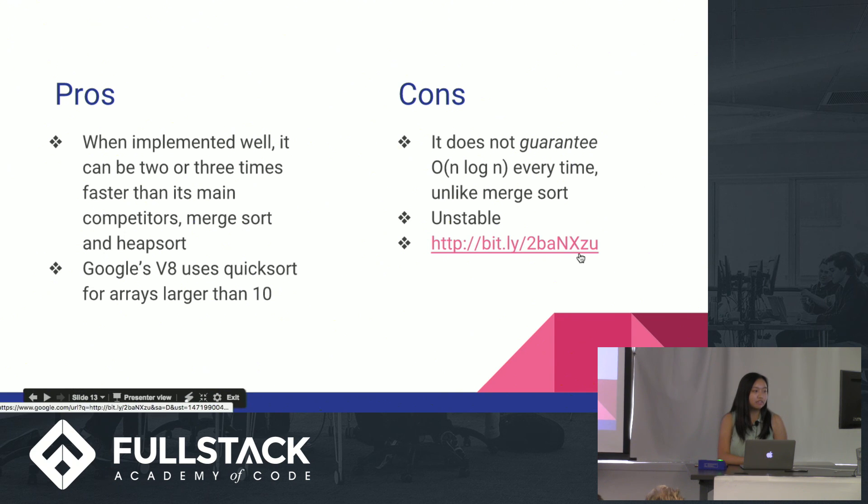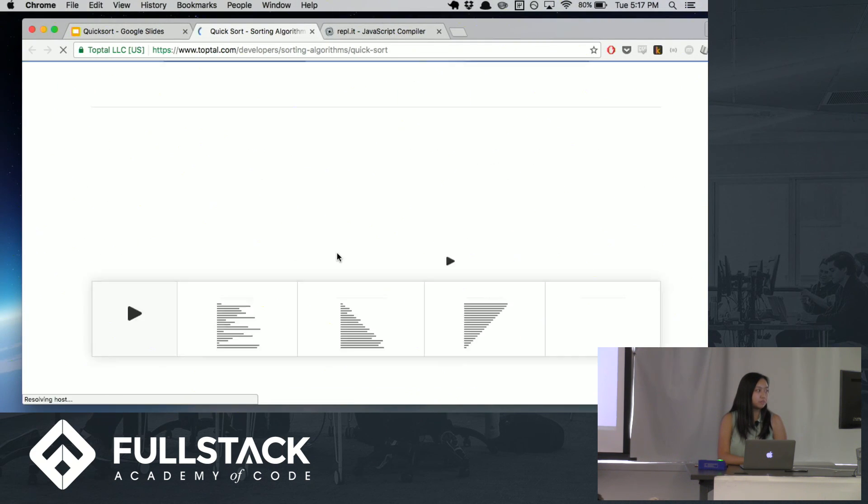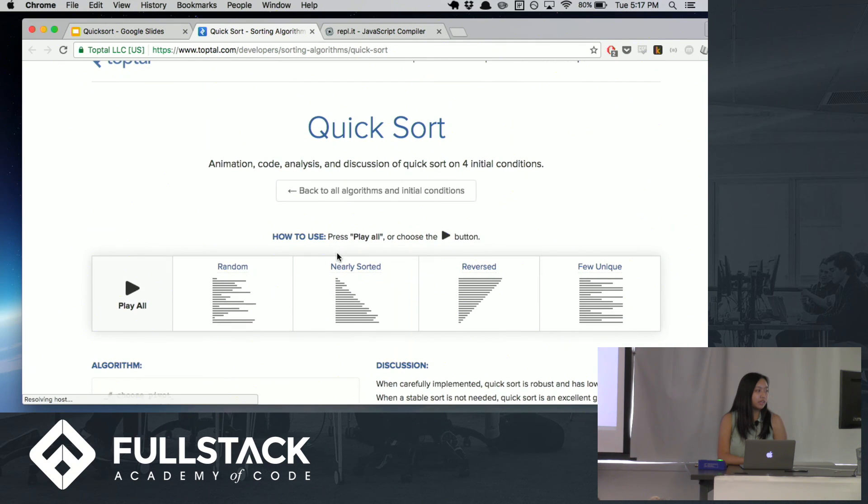And here's a visualization of that con. So here is quicksort run on a random array, nearly sorted, reversed, and an array with few unique values. So if you play all of them at once, you're going to see the one with few unique values takes a lot longer, because it's doing a lot of unnecessary checks and swapping.